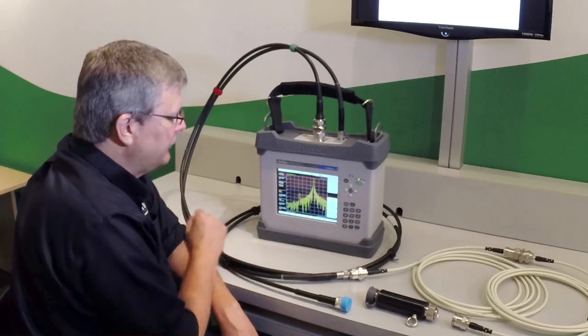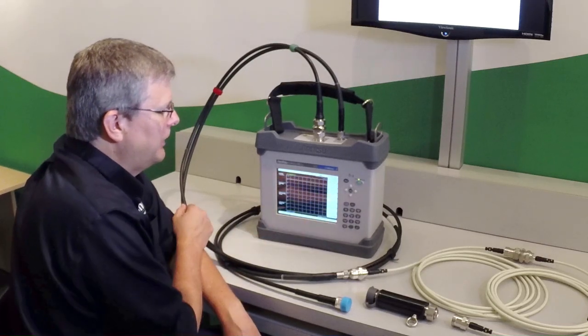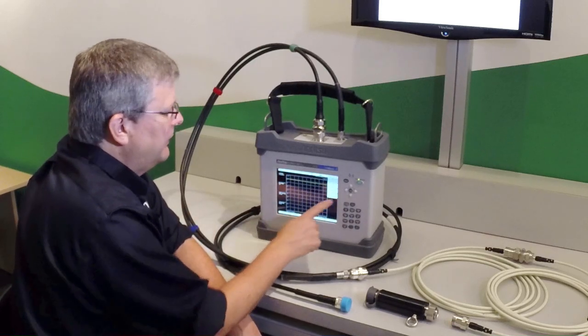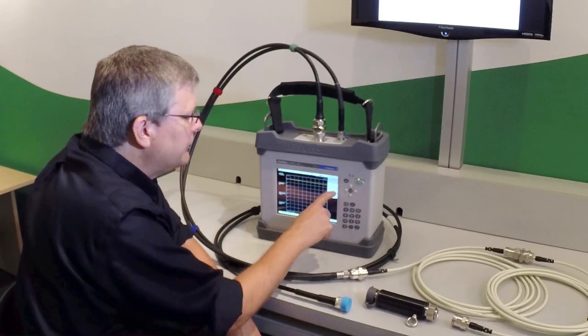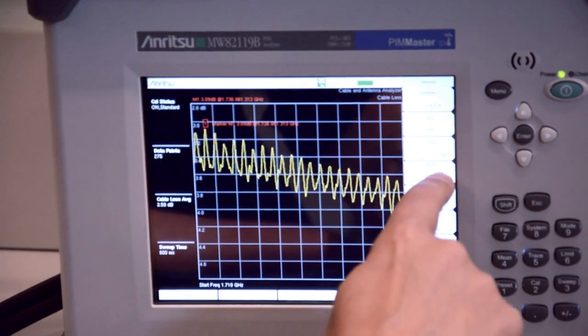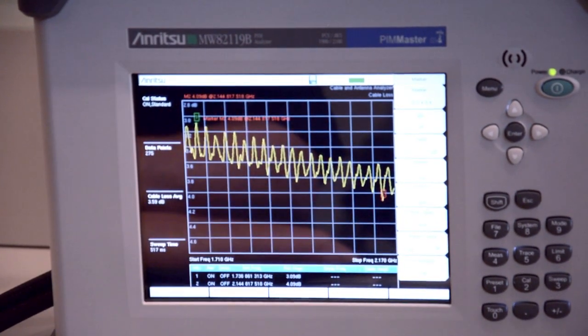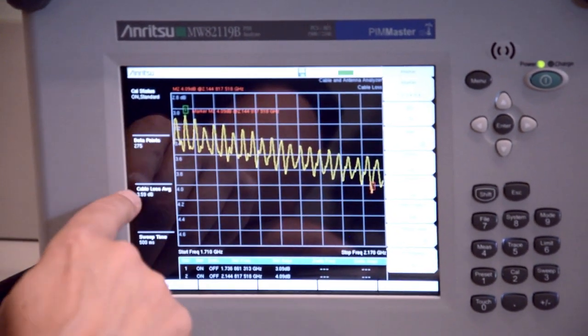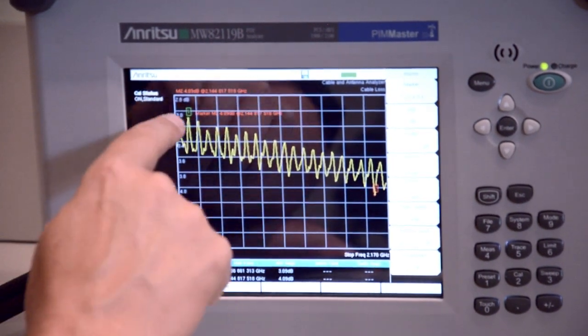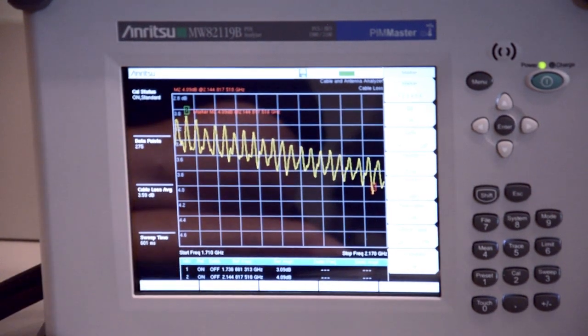While the cable is open, the next logical test to do is go into the measurements menu and perform a cable loss test. I'll do the amplitude to auto scale, and in the marker menu we have an automatic feature to automatically apply markers at the peak and the valley. It shows us here that the average cable loss is 3.59 dB, but I've also put markers at the peak and the valley in case someone wants to mathematically verify that measurement.